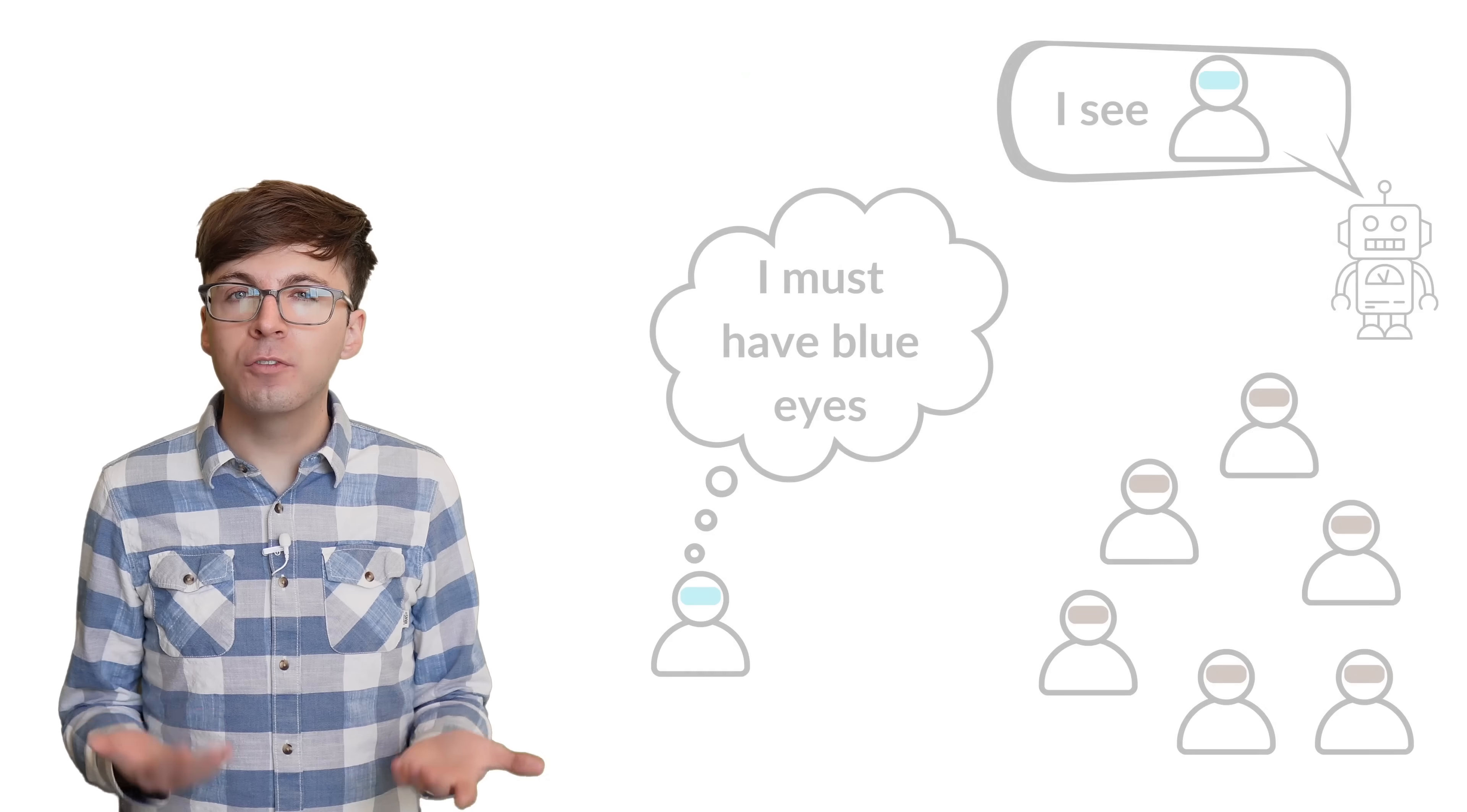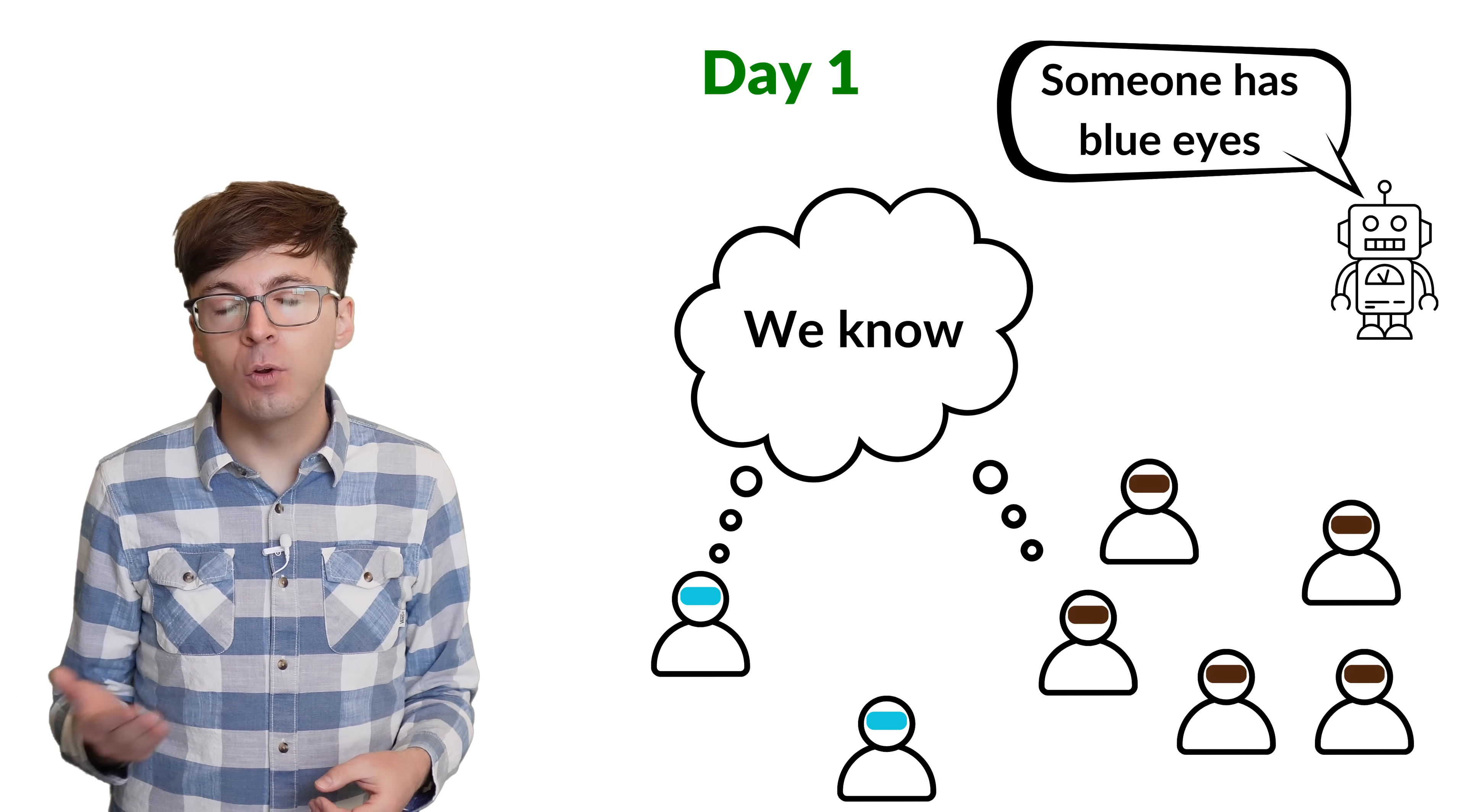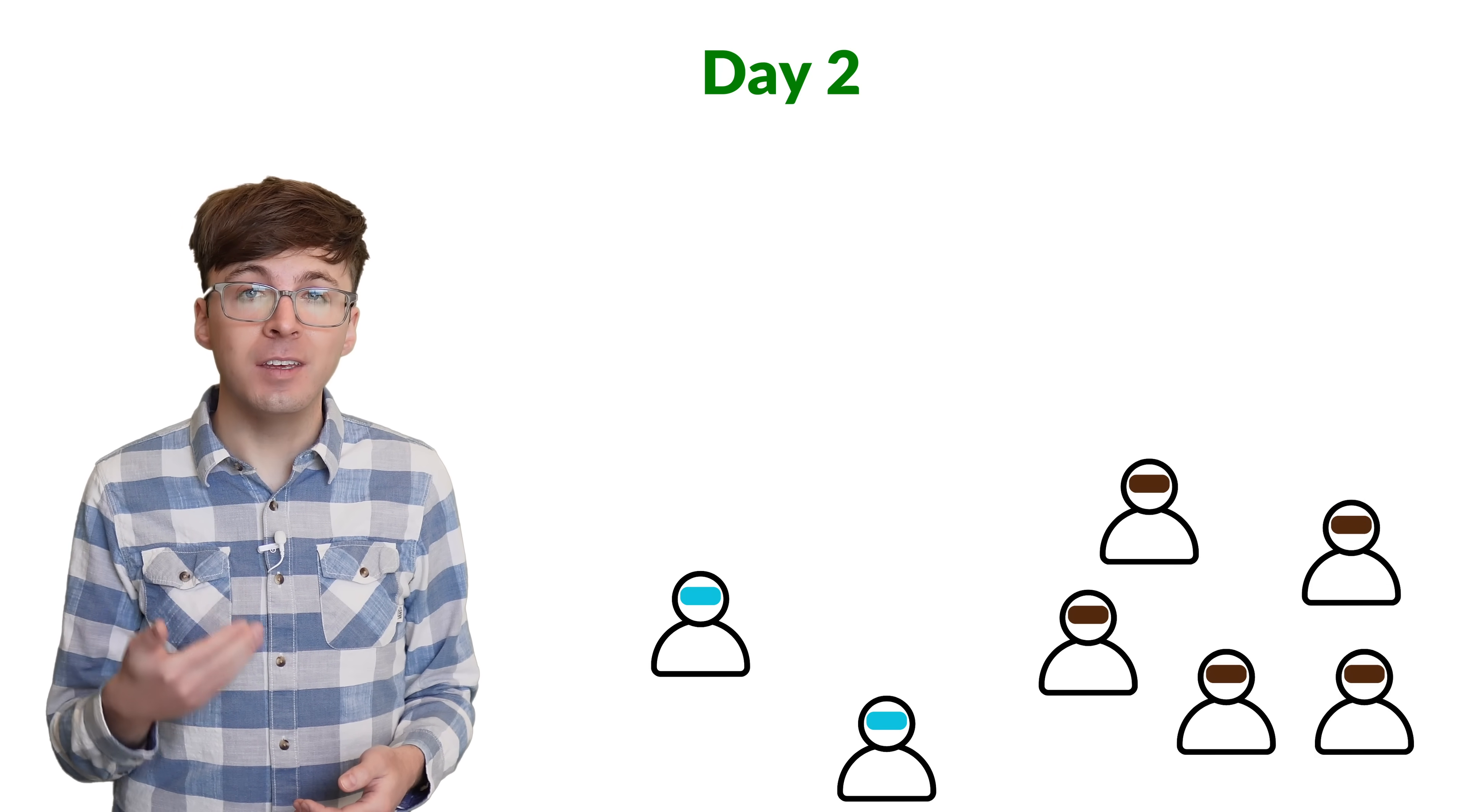But what happens if there are two blue eyed people on the island? Each blue eyed person has seen one blue eyed person, and every brown eyed person has seen two blue eyed people. When the stranger says there's a blue eyed person on the island, everyone already knew that. So will nothing happen? Let's walk through it. Imagine that you're one of the blue eyed people. You've only seen one blue eyed person on the island. So you might think that they're the only one. That would mean that they will leave the island at midnight, since the stranger just told them that somebody has blue eyes. But they won't leave on the first day because they see that you have blue eyes.